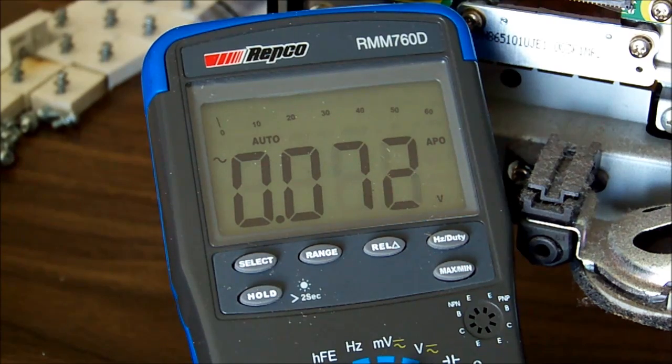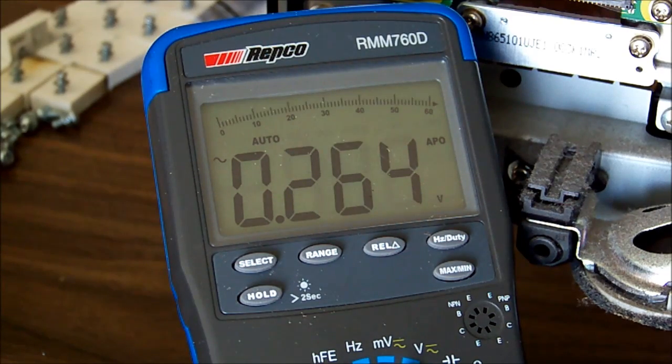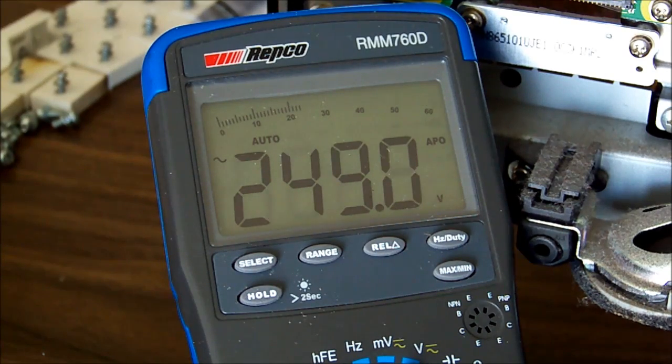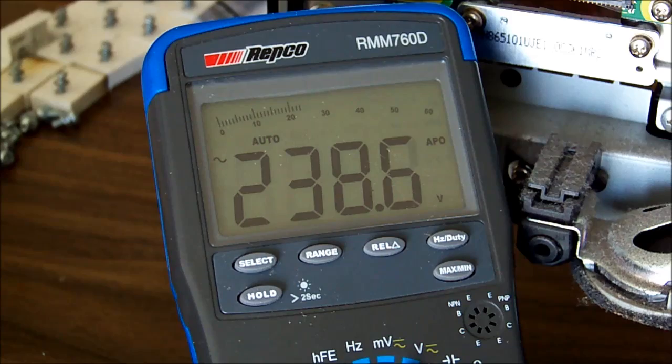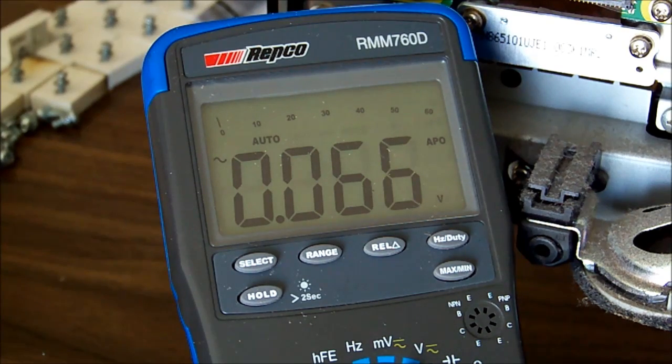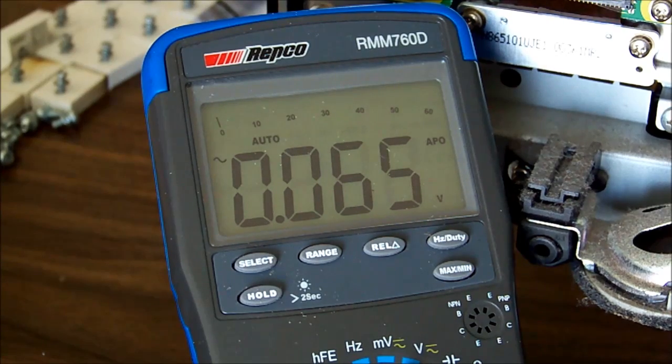So it looks like we have a primary side fault there. Let's measure across our live and neutral and just see if we've got 240 at the end of the fuses. We do 238. That's all right. So somewhere between the end of the fuse and that bridge rectifier we have very high resistance. And I can see a power resistor that could have gone high. I'm just going to have to follow the circuit now and figure out what goes where.